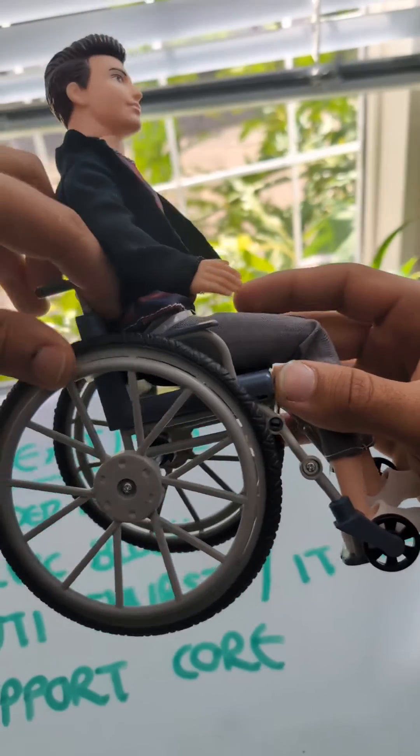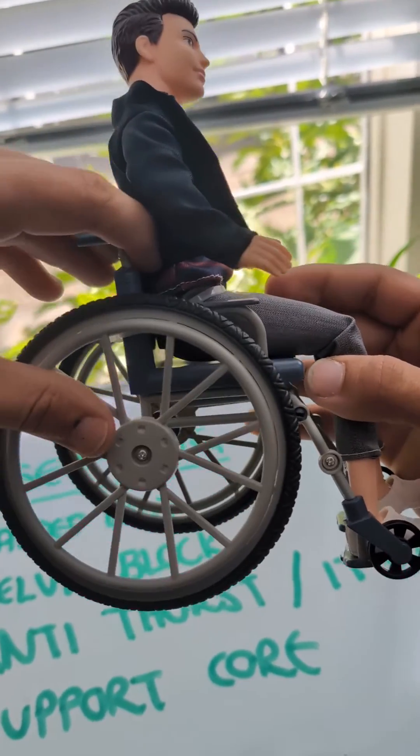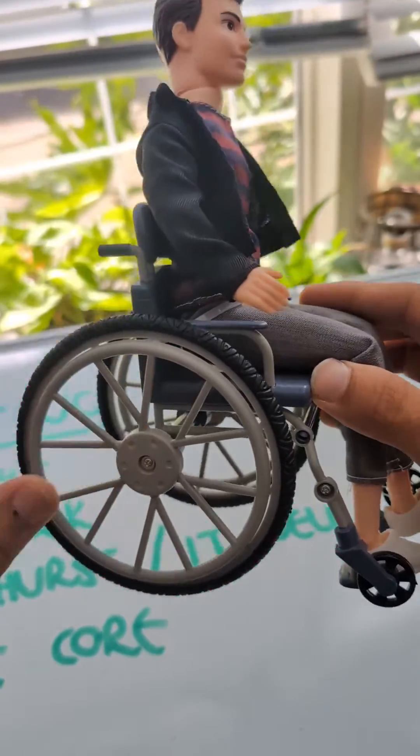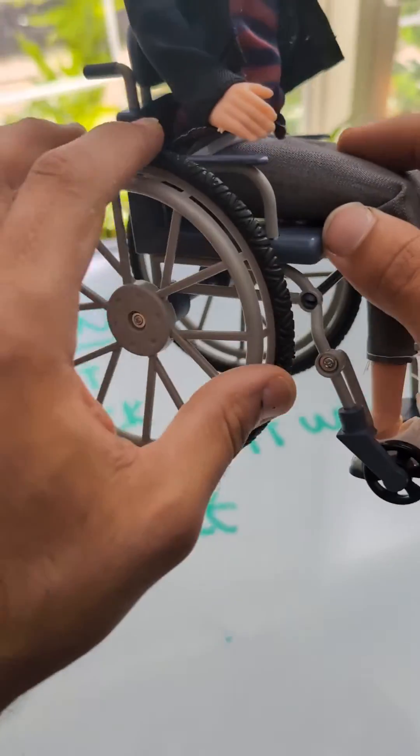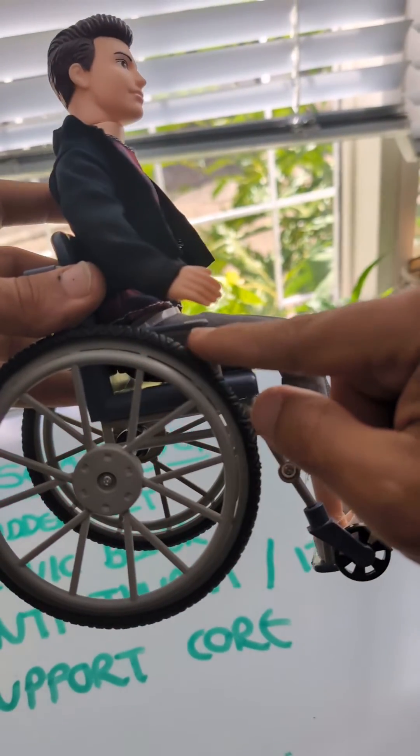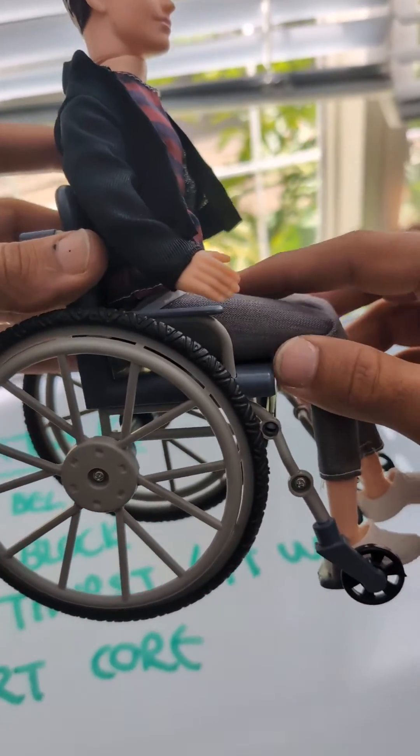You want to support the pelvis by pushing a little bit of extra padding over here, just at the PSIS to tilt that pelvis forward. You want to use an anti-thrust style of cushion or some sort of IT well, ischial tuberosity well, to sort of sink the bottom into the cushion and create a bit of a ramp under here to stop the client from sliding forward.